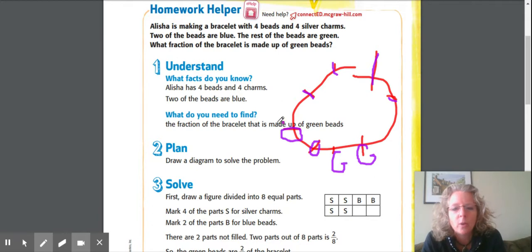So what do we understand? Four beads, four charms, two beads are blue, and we need to know the fraction of the whole bracelet, not just the beads guys, the whole bracelet, that's made up of green.